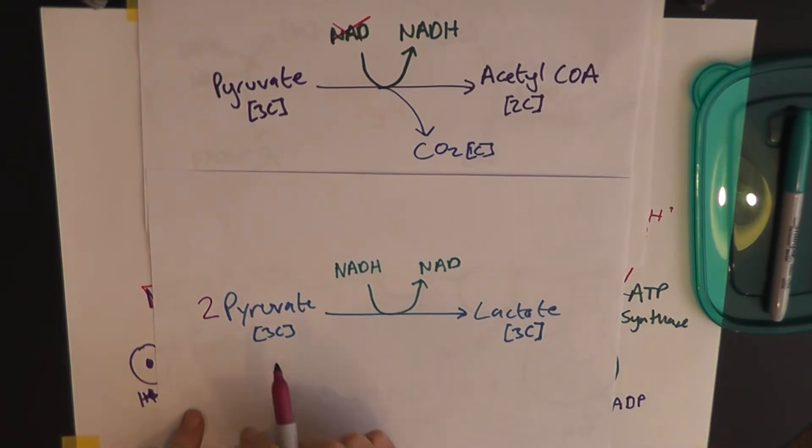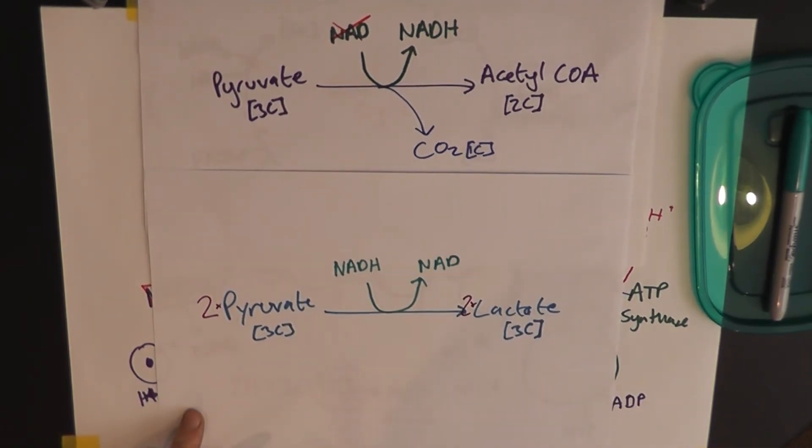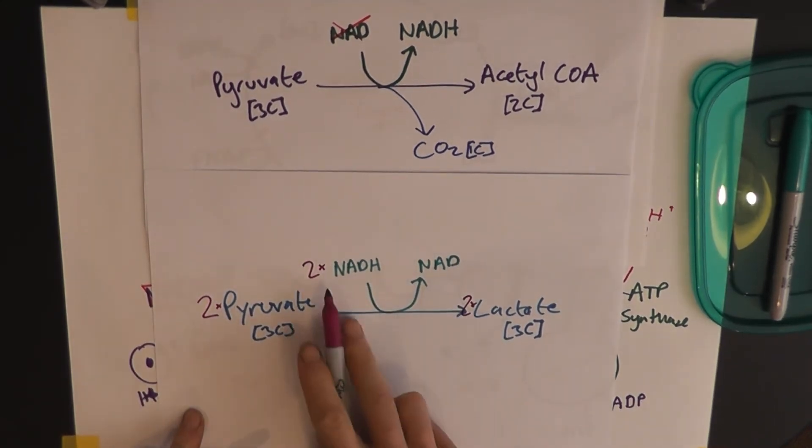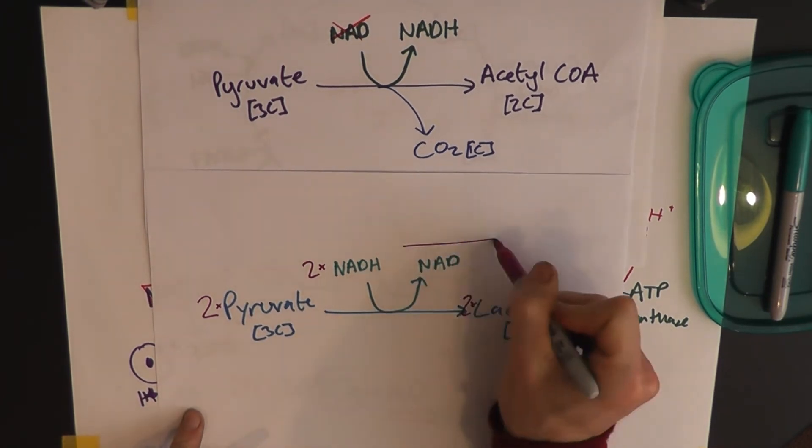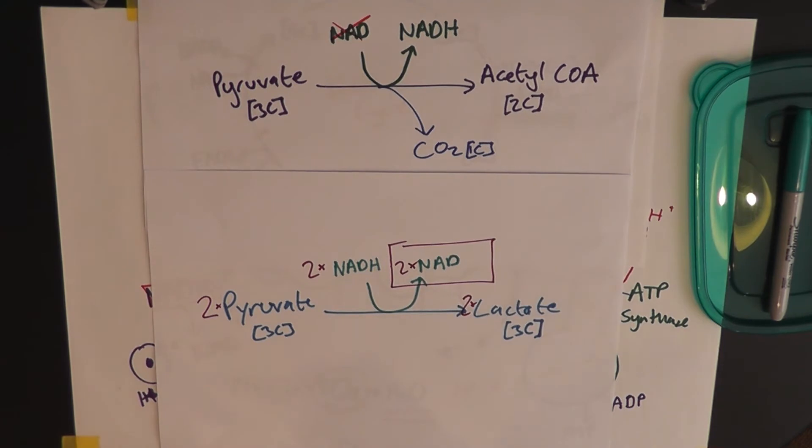Pyruvate is a three-carbon molecule. Which means you get two lactate three-carbon molecules. Which also means you get two NADHs being converted into two empty NADs.